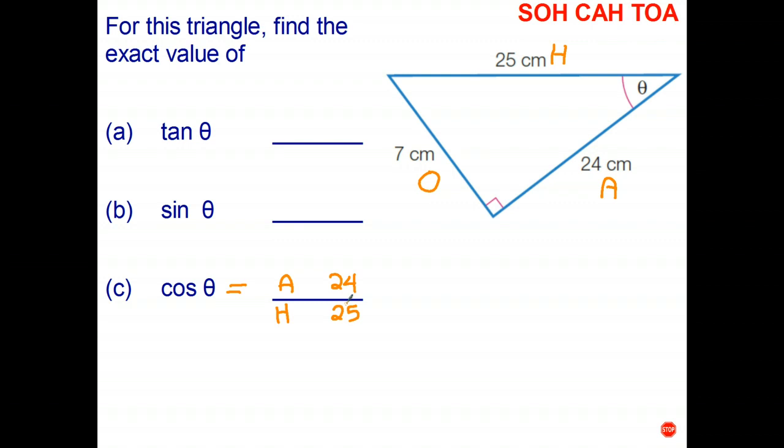Okay, have a go at questions A and B please. I'll stop the video. Once you finish, turn it back on, you can check your answers. Okay, let's see how you went. So the tangent ratio is the opposite over the adjacent—that's going to be 7 over 24.